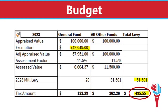This example is for a $100,000 residential property using the 51.501 mill rate from last year. Starting with the general fund, you see the $100,000 home listed. By statute, there is a $42,000 exemption on residential properties for the general fund only. Subtracting that exemption produces the $57,000 adjusted appraised value. The assessment factor for residential properties is 11.5%, so we multiply $57,000 times 11.5%, leaving us with $6,600 as the assessed value. We then take this times the 20 mills — a mill is 1/1,000th, or $1 for each $1,000 of property value — so we multiply by .020 and get $133 in taxes.